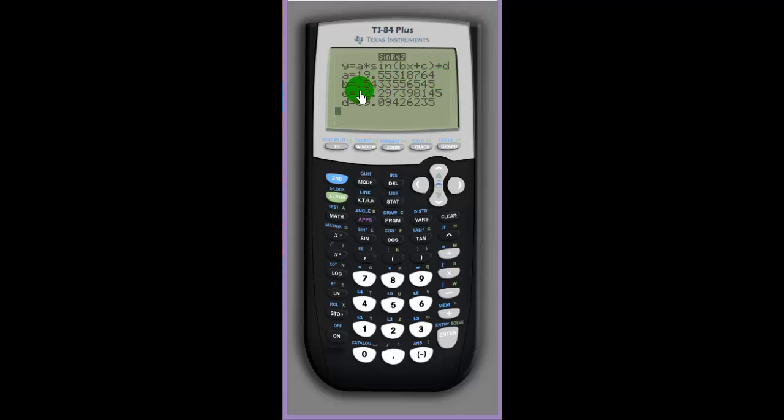It tells you what a equals, which is 19.553187...; tells you what b is, which is approximately 0.54; tells you what c is, which is approximately negative 2.297; and d is approximately 69.094.